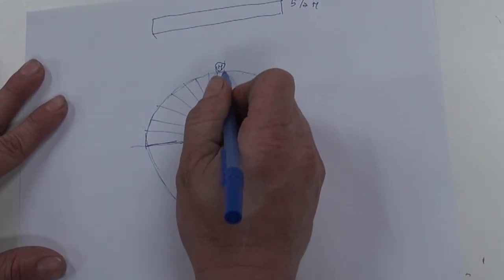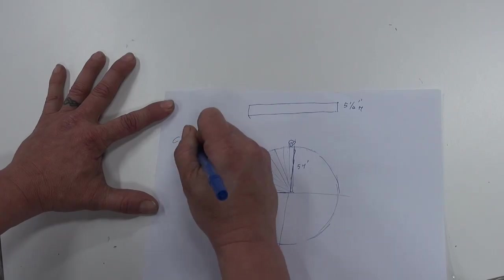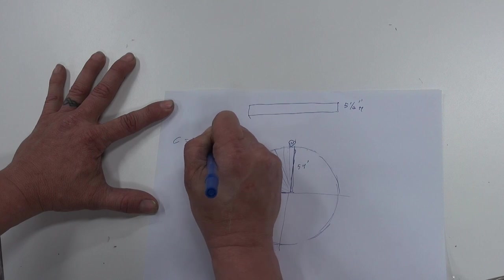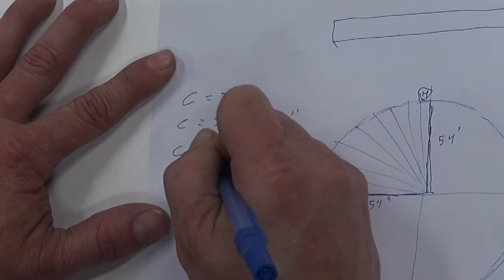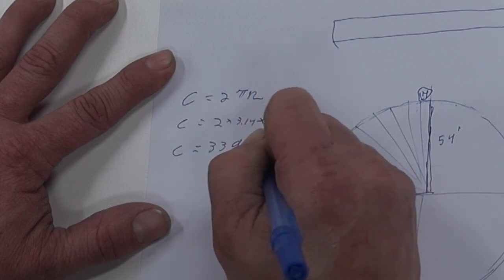I need to find the circumference of this quarter circle. C equals 2 pi r. So C equals 339.29.